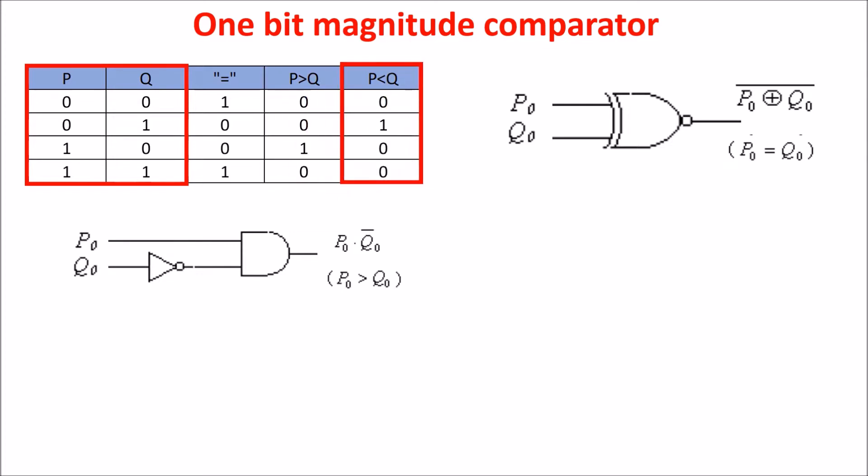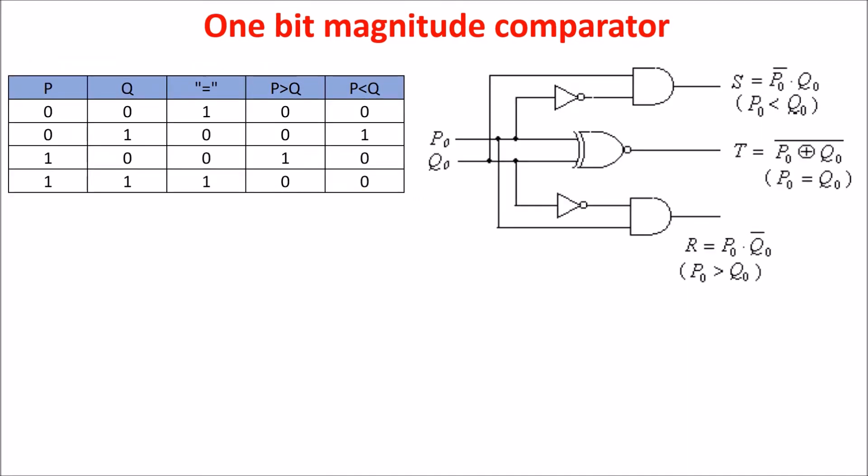For the P less than Q case we need P zero and Q one and this can be achieved with an AND gate and an inverter. So this is the cell of one bit comparator.